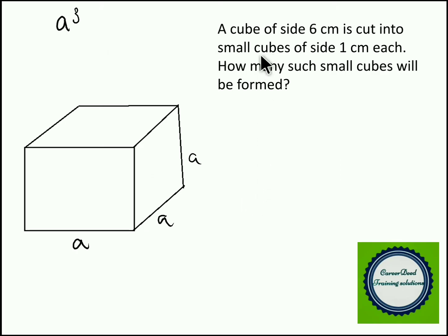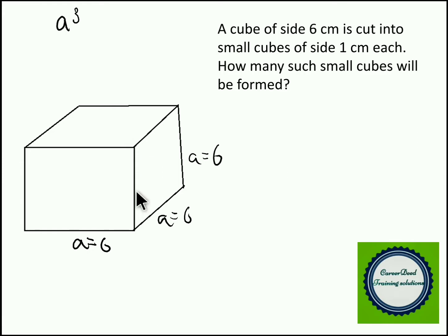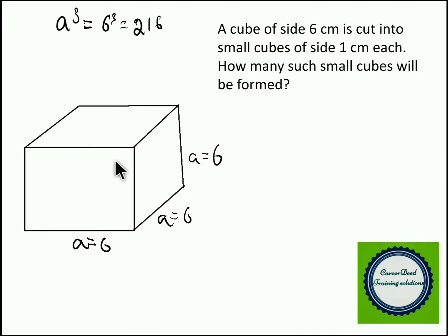Now, a cube of side 6 centimeters is cut into small cubes of side 1 centimeter each. How many such small cubes will be formed? Here you can assume this is the big cube and the sides of the big cube are 6 centimeters. You are cutting this big cube into small cubes of side 1 centimeter each. The volume of the cube is A³, that is 6³, which gives you 216. So 216 is the volume of this big cube. However volume remains the same when you cut it.